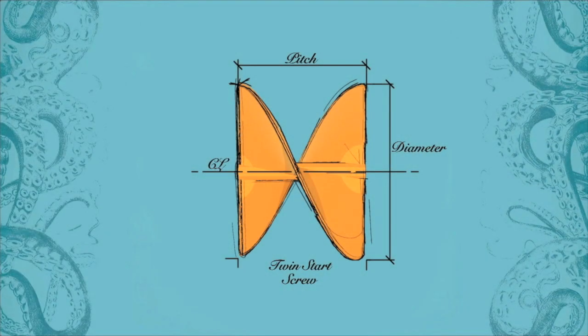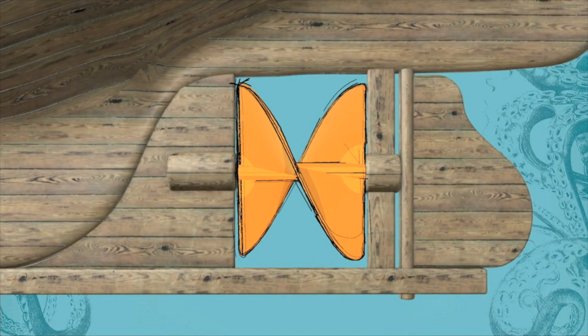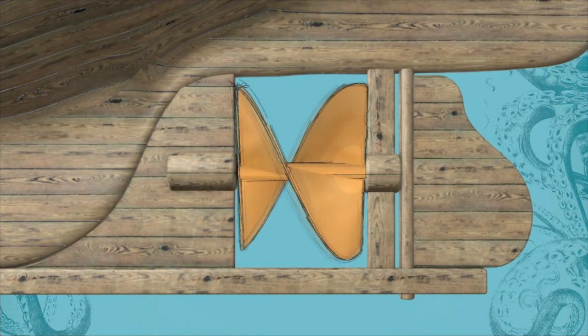A new shorter screw propeller was developed and was first fitted to the Archimedes. This paved the way for the modern propellers of today.